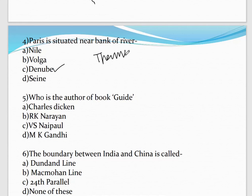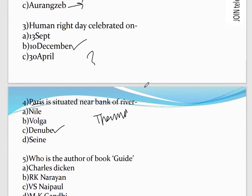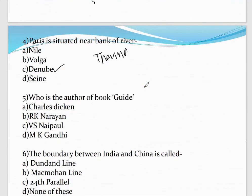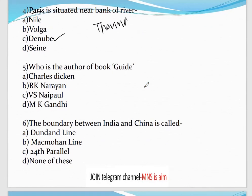For famous cities like Paris, London, or cities in Egypt and France, it is important to know which river they are situated on. If you want previous year question PDFs, you can find them on my Telegram channel. I have also uploaded videos on English, Science, and GK topics.